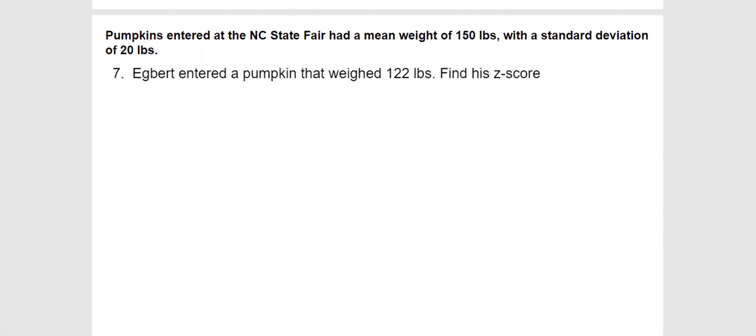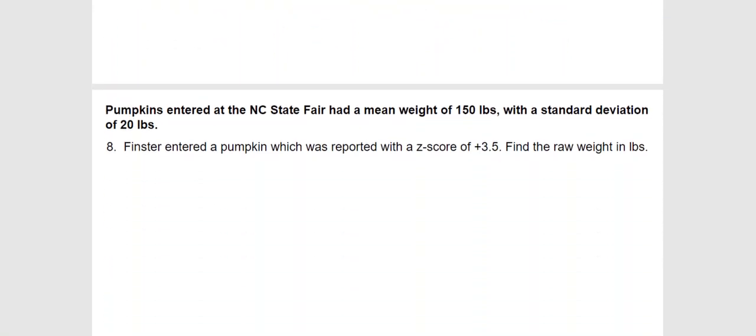All right, Egbert entered a pumpkin at the North Carolina State Fair, 122 pounds. They want to find the Z-score. So, his 122 minus the mean of 150 and standard deviation of 20. That means he has negative 28 on top, which settles down to a negative 1.4. Just for the record, speaking of records, record pumpkins usually wind up closer to 1,000 pounds, at least in the several hundreds when they get to record proportions, although I still have no idea how you get a 1,000-pound pumpkin off the ground, transport it, and get it all the way to the State Fair to be judged without it breaking apart. I don't see that happening, but anyway.